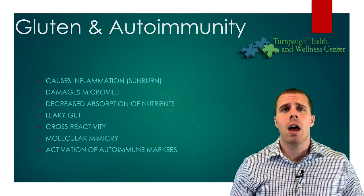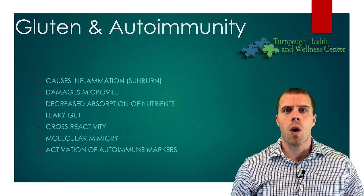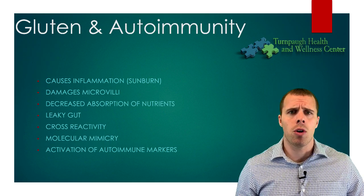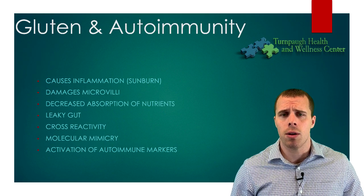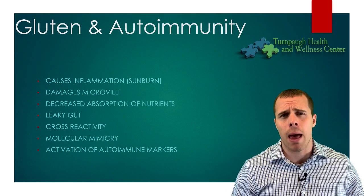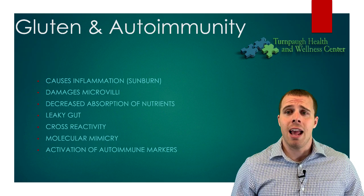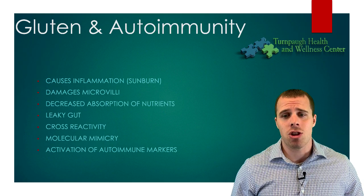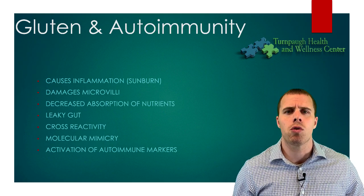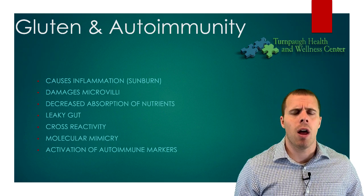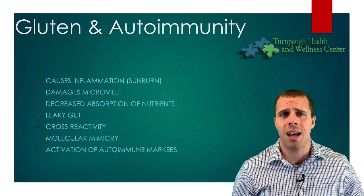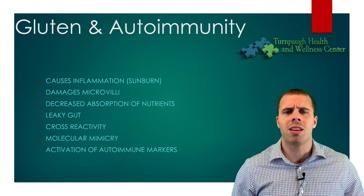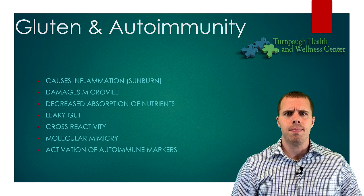Joint issues and thyroid issues also present with gluten exposure, so relying solely on digestive complaints to assess gluten reactivity misses the mark. We also have molecular mimicry, which is how Hashimoto's or rheumatoid arthritis can enter the picture. As food particles get into the bloodstream, the immune system has a hard time distinguishing between a food particle and a piece of joint or thyroid tissue — they look awfully similar — so the body attacks both, increasing risk of autoimmunity.